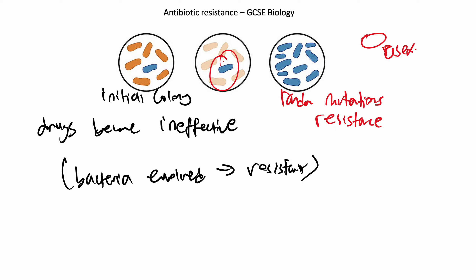Only this one is going to survive. Bacteria reproduce asexually - that's the key part. They don't need a mate to survive, so even if just one survives it can reproduce and create a new colony. This new colony of bacteria all carry the mutation for antibiotic resistance - that's the really deadly part. This one that survived can asexually reproduce by itself and create a whole new bacteria colony, all with the resistance.